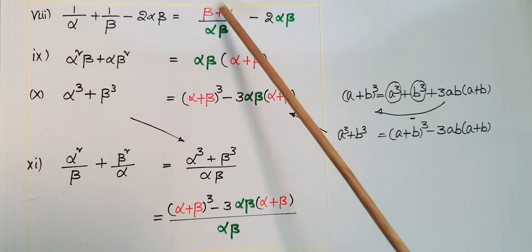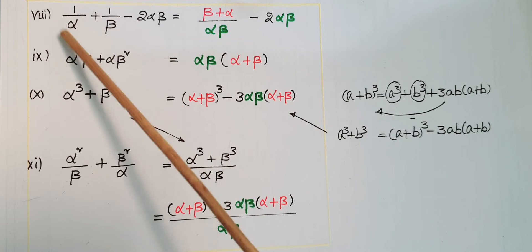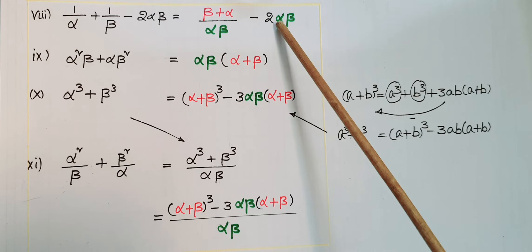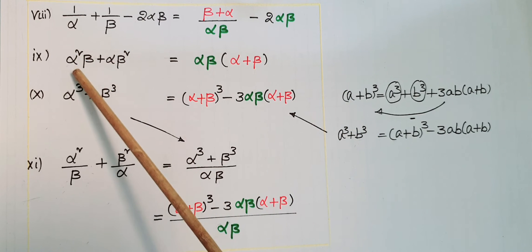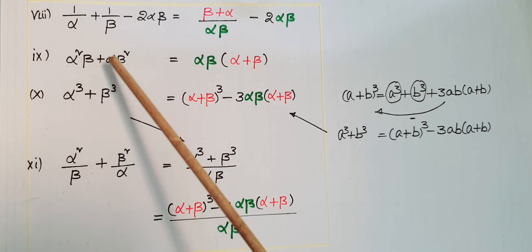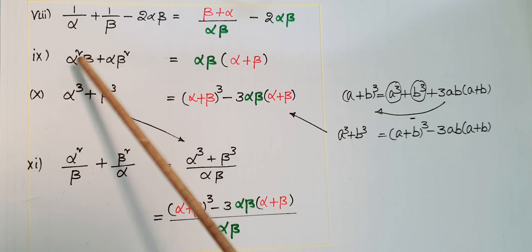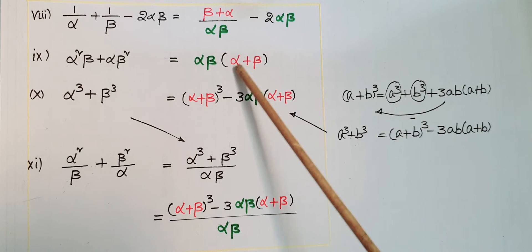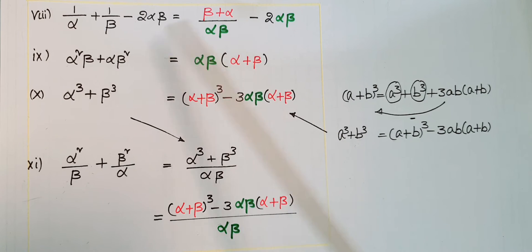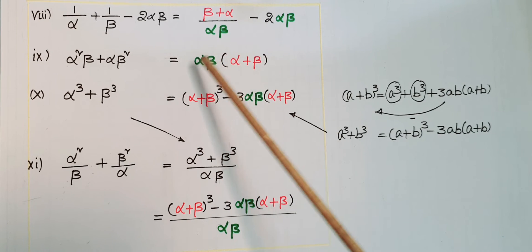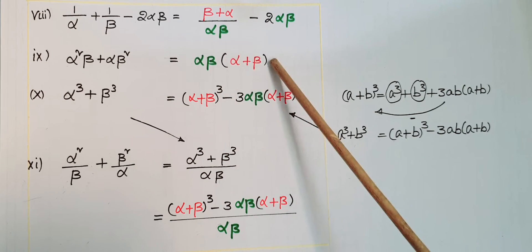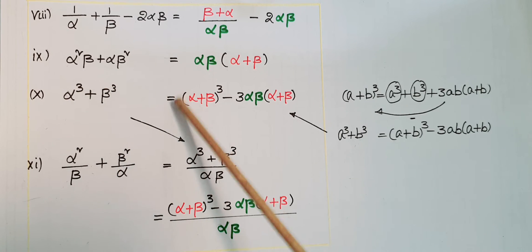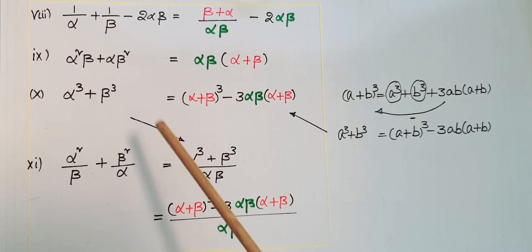Next, 1/α plus 1/β minus 2·alpha·beta: take LCM of alpha and beta in the first two terms to get (beta plus alpha) by alpha·beta, then subtract 2·alpha·beta. Next, alpha²·beta plus alpha·beta²: alpha·beta is common, so this equals alpha·beta·(alpha plus beta).